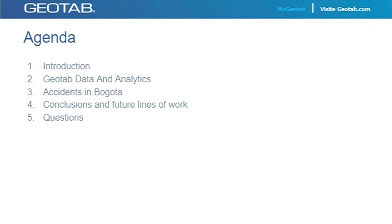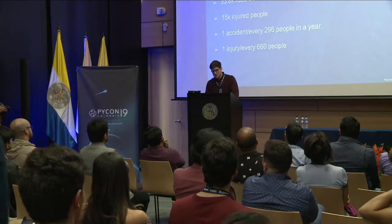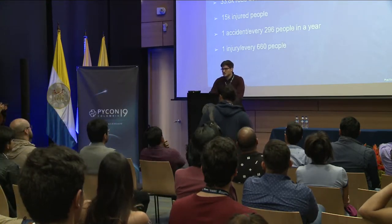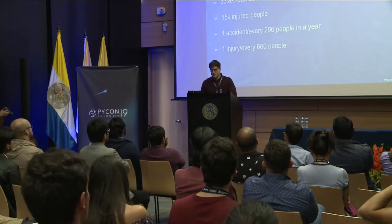Before starting, I want to share why I wanted to focus on road safety. The first number — you probably know it better than me — is about 10 million people living here in Bogota. In the dataset I found — and these are only the reported accidents, so probably many more — we got 33,800 accidents in 2017. From that, 15,000 injured people. That makes one accident every 290 people and one injury every 660 people in that year. What if we could prevent some of these accidents and reduce these numbers?